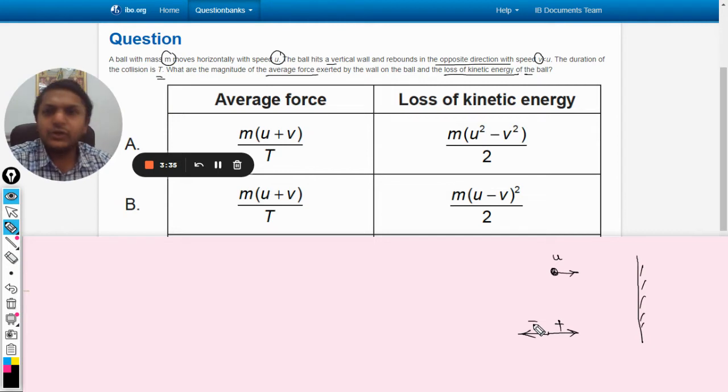Now this ball is moving with velocity u, it will be taken as positive. It collides with the wall, it moves backward in the negative velocity.